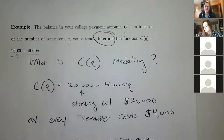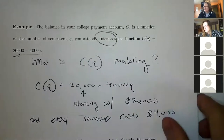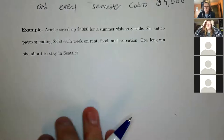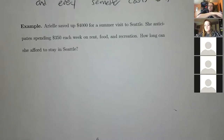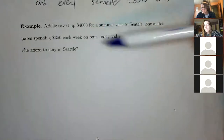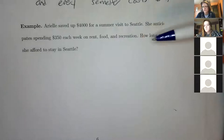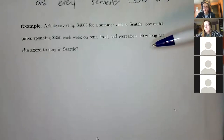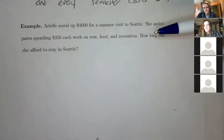So again, you're just trying to reinterpret the equation. This next one is in a similar vein. Instead of going to college, you are saving up to go to Seattle. You save $4,000 and anticipate spending $350 each week on rent, food, and recreation. I went to Seattle once — it was almost $300 a night, so this isn't very realistic. I'd recommend Vancouver if you're going up there, or Olympic National Park — beautiful.